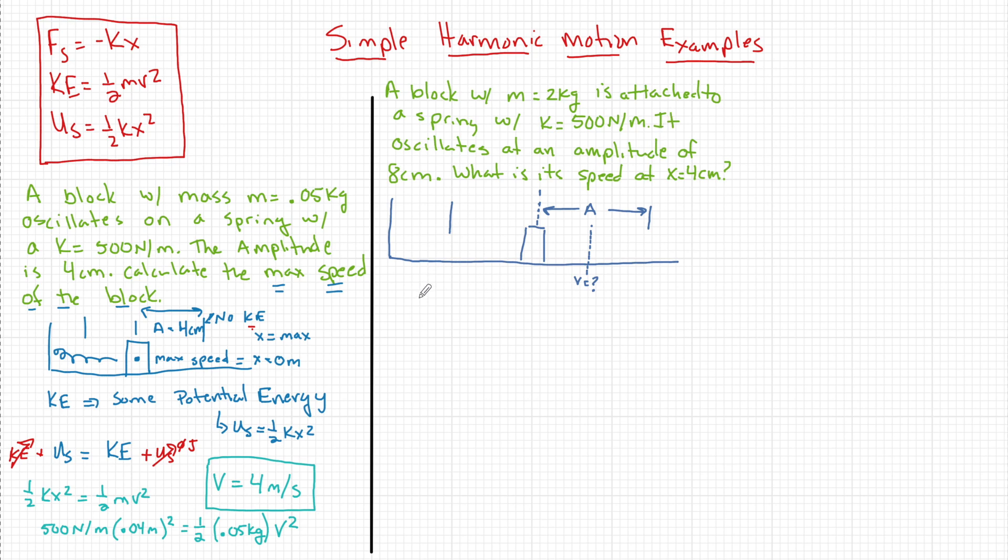This is really a two-step problem because what we need to remember from past units is that if there's no outside work being done, no non-conservative forces like friction or tensions or applied forces, that energy is conserved. So if I know total energy anywhere, I know it everywhere. So I need to find energy total because if I could do that, I can apply that energy total to anywhere in the system or anywhere in this oscillation. So we find energy total and then use that in the KE formula.